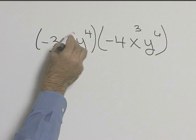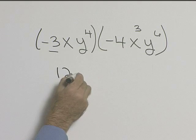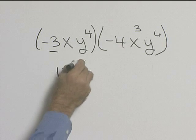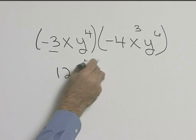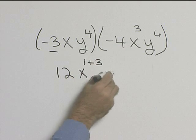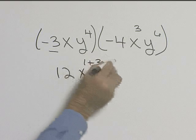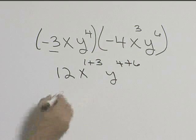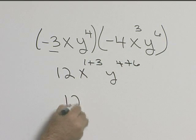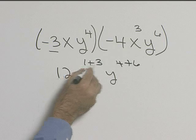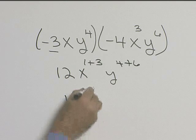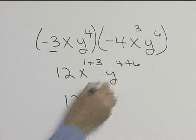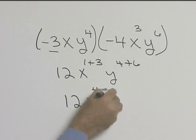We have x to the first and x cubed, so we'll add those exponents, times y to the fourth plus sixth. So if we simplify, we get 12x to the fourth y to the tenth.